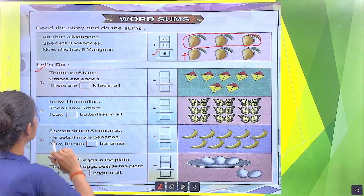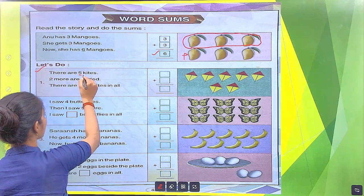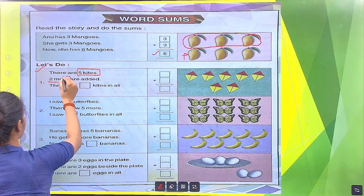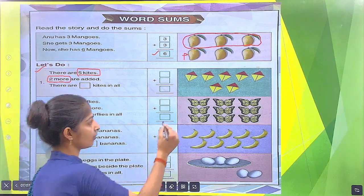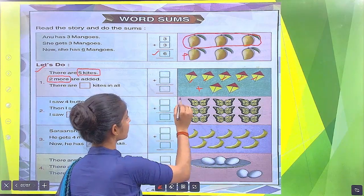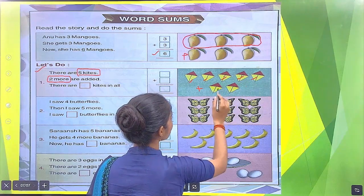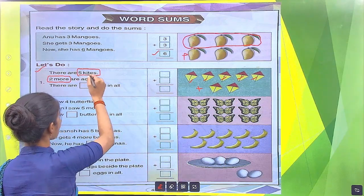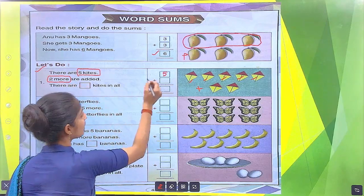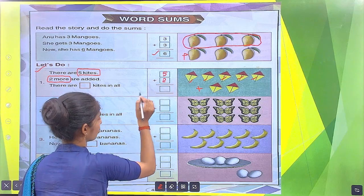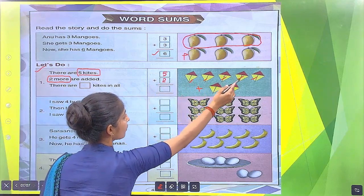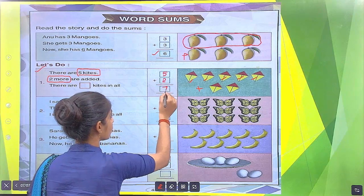There are 5 kites. 2 more are added. We have 5 kites: 1, 2, 3, 4, 5. 2 more kites are added. Their total number of kites? 1, 2, 3, 4, 5, 6, 7. We put here the numbers. There are 5 kites, we put here 5. How many added more? There are 2, we put here 2. How many total kites? 1, 2, 3, 4, 5, 6, 7. There are 7 total kites.